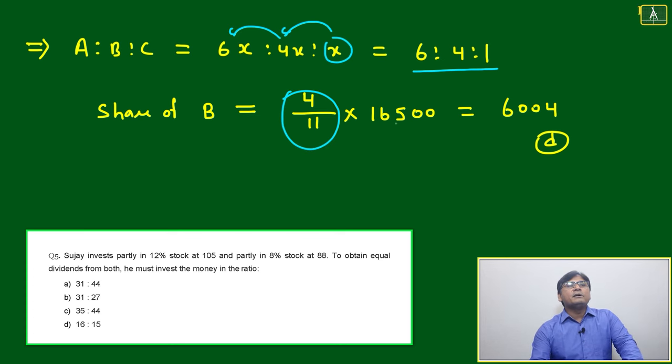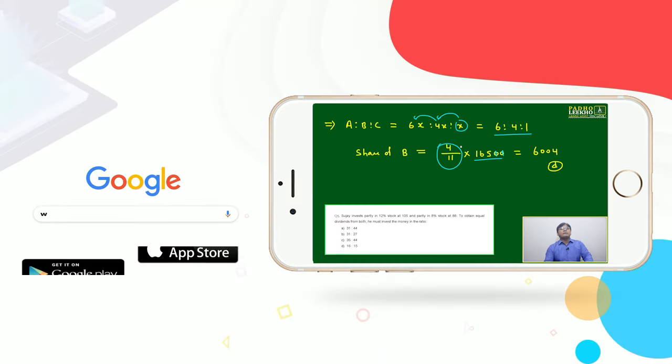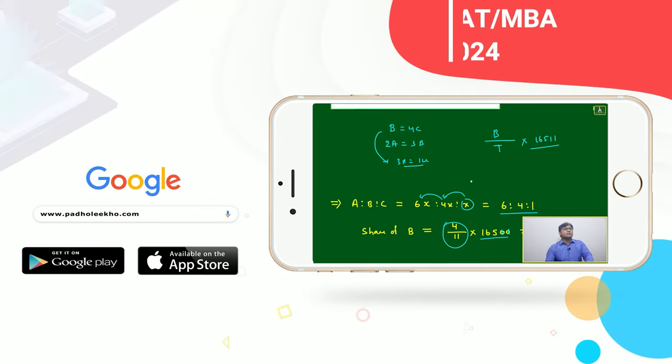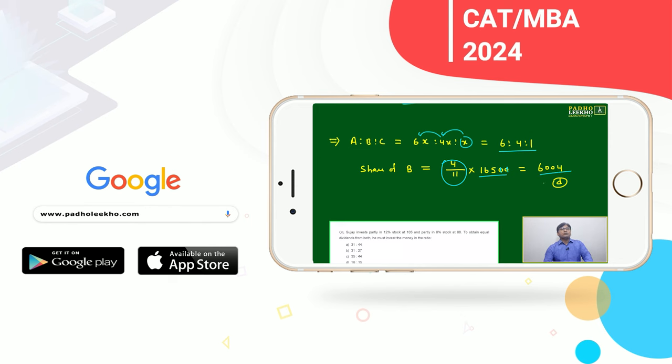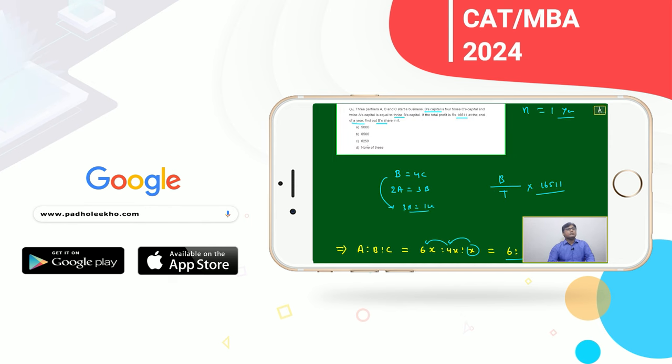Then the share of B will become 4 out of 11 multiplied by 16,511. It's given as 11—I think it's written by mistake, no need to worry. 16,511 is given in the question. 4 out of 11, it will become 6004. I think, no, it's not given, it will be...